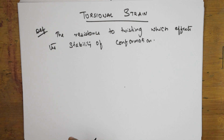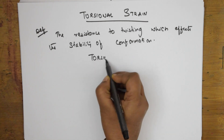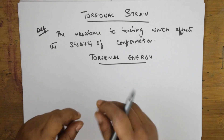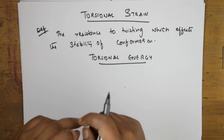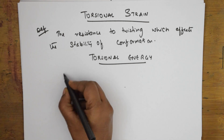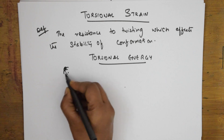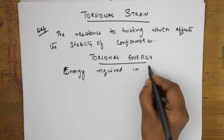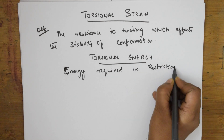One more concept related to torsional strain is torsional energy. Because of the repulsion and resistance to rotation of the restricted molecule, this is the energy difference of one to twenty kilojoules. Because of electronic repulsions, torsional strain is created, and the energy required in this restriction is called torsional energy.